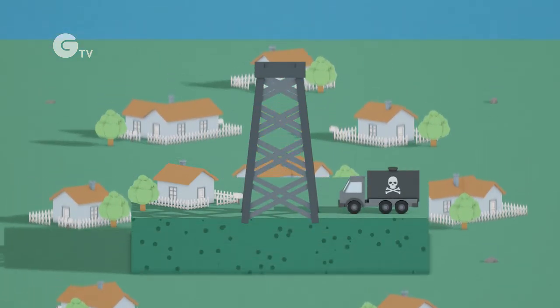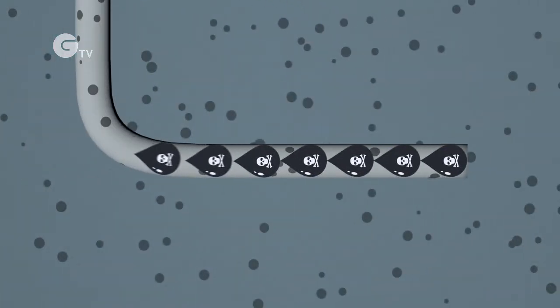The process starts by drilling sometimes more than a mile deep to get to shale rock. Then fracking fluids are injected.